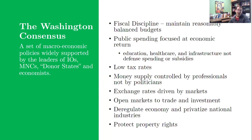You want to deregulate your economy and privatize national industries — reduce red tape and get as much of your industry into private sector hands rather than having government run things like a flour mill or a state bank, both of which the state of North Dakota does, pointedly running counter to the Washington Consensus. And finally, you want to protect property rights. People won't invest and build up industries if they worry that the property rights system might be flipped and land they've invested in gets seized by the government. You want investors to have confidence in the property system.